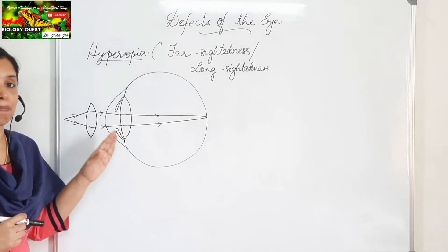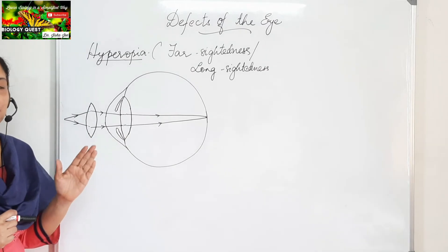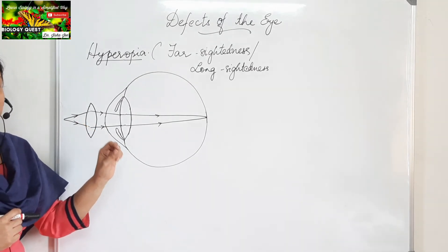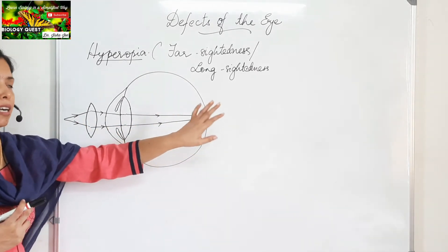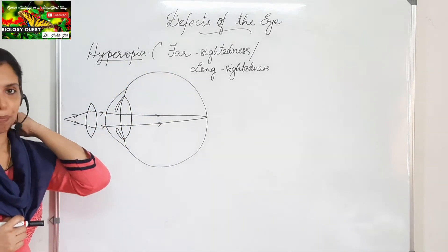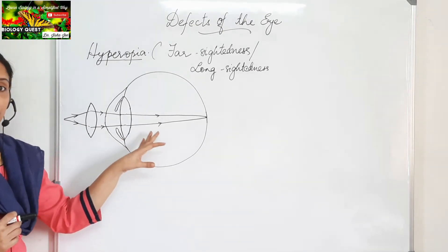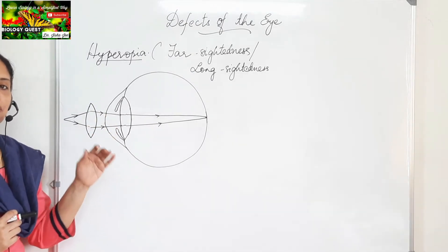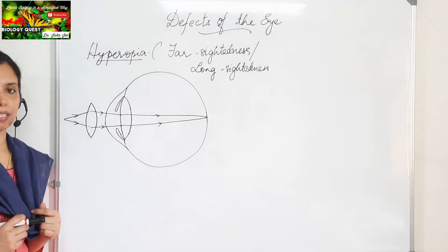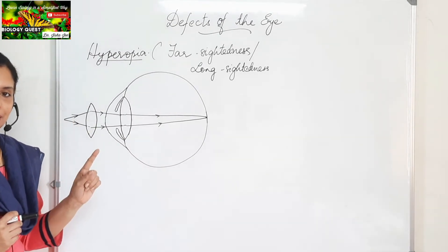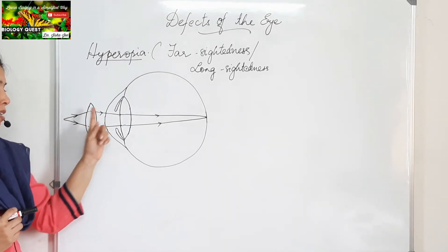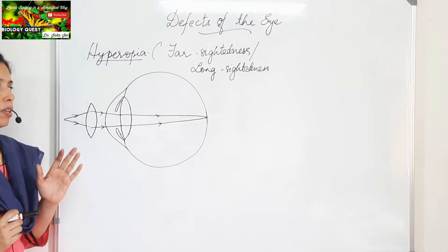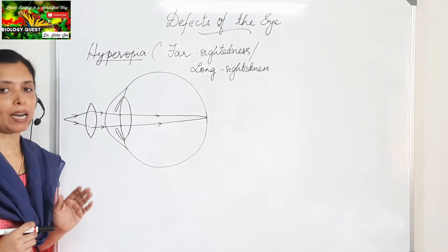This can be asked as a diagram-based question. The first diagram will be given and you will be asked to identify the defect. Look at the light rays — if coming from a nearby object and the image is forming behind the retina, confirm it is hyperopia or hypermetropia. When asked to redraw the corrected diagram, remember to draw three sets of arrows. That is with regard to hyperopia or hypermetropia.